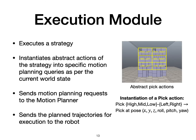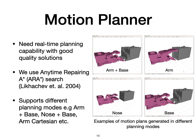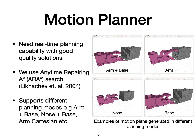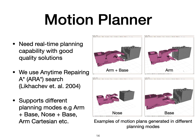The chosen strategy is then sent to our execution module that instantiates the abstract actions of the strategy into motion planning queries. An example is shown on the right where abstract pick actions such as 'pick high left' are instantiated into specific 6D poses. These queries are then sent to the motion planner, which uses an anytime planner to compute the robot joint trajectory to reach the desired pose. Using an anytime planner ensures that we obtain an initial trajectory quickly and get better and better trajectories as we allow more time for planning. Our motion planner is efficient and supports various planning modes accounting for different combinations of the joints.